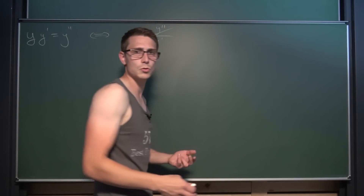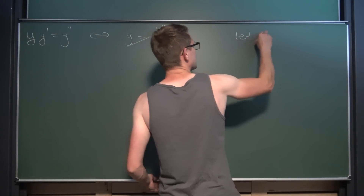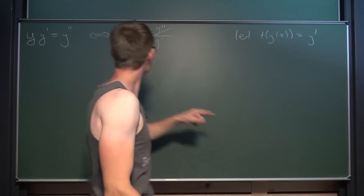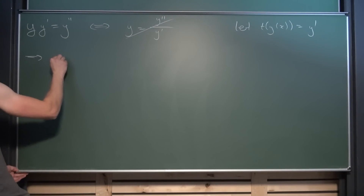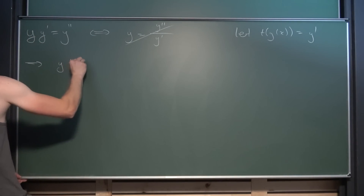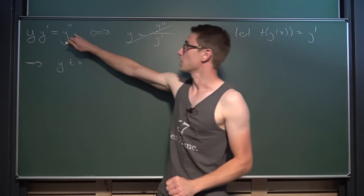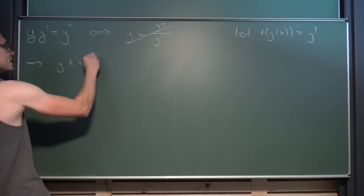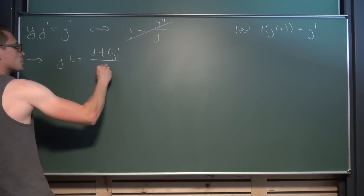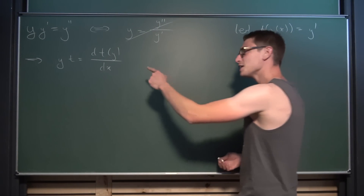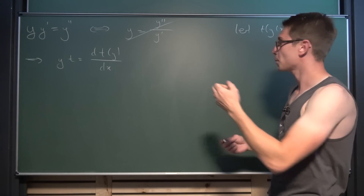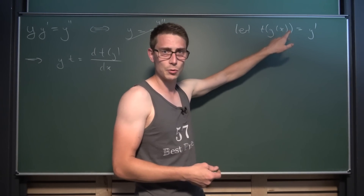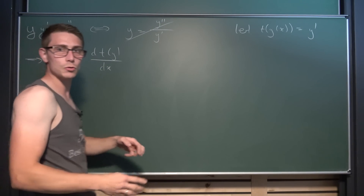We are going to say that y prime is equal to a new function, but this time with respect to y. So we let t of y of x be equal to y prime. Now if we plug everything into the equation, we get y times t — since y prime is t — equals y double prime. And y double prime is y prime differentiated with respect to x once again, which is the same as differentiating t of y with respect to x. Writing this in Leibniz notation makes things easier. Note that t of y is a function implicitly with respect to x in some kind of way.